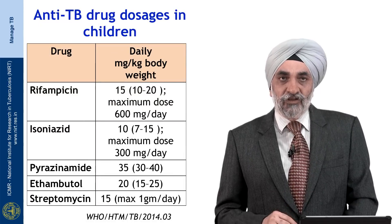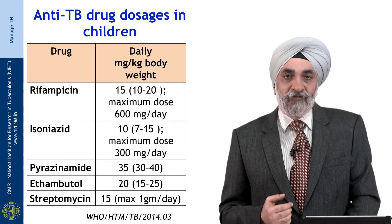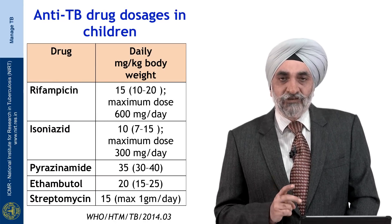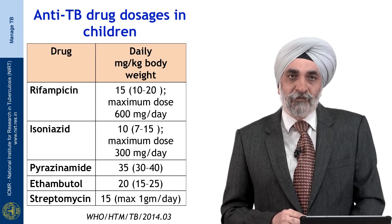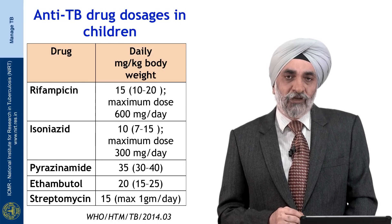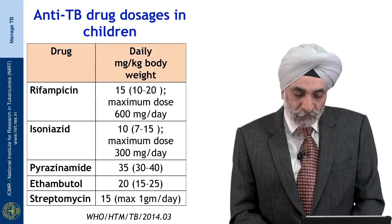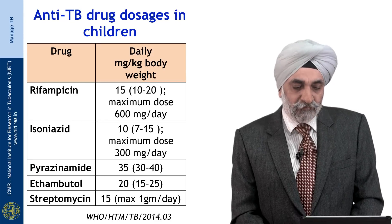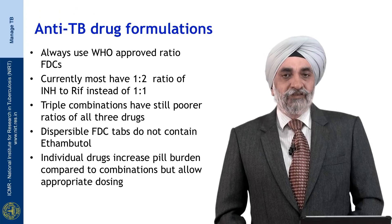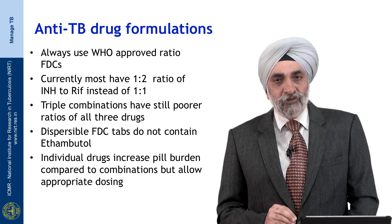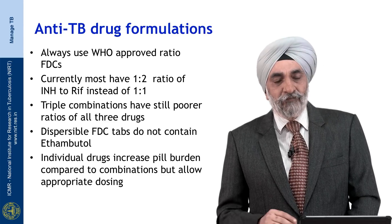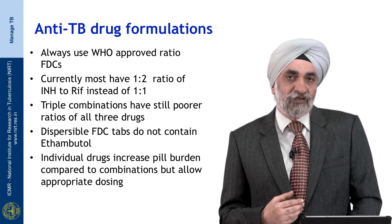Drug doses in children are higher: rifampicin 15 mg/kg (range 10–20), isoniazid 10 mg/kg, pyrazinamide 35 mg/kg/day, ethambutol 20 mg/kg/day, and streptomycin 15 mg/kg/day. When using these drugs individually, the pill burden can affect adherence, so we often use fixed-dose combinations (FDC).